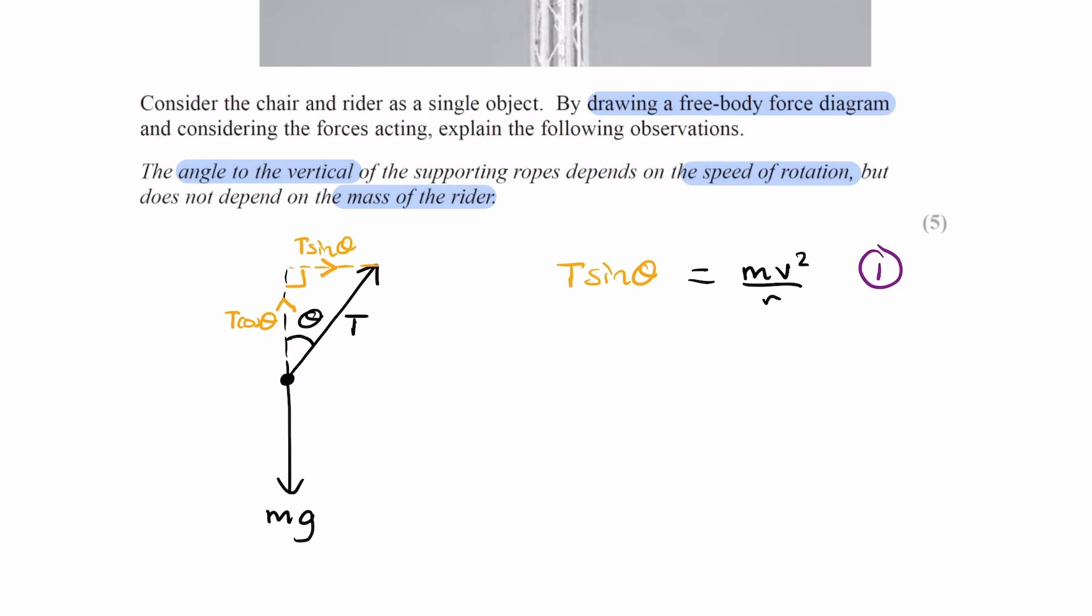And T cos theta, which is the vertical component of tension, that will equal to the weight. The resultant force is towards the center of the circle, and that's the case whenever moving in a circle at constant speed.